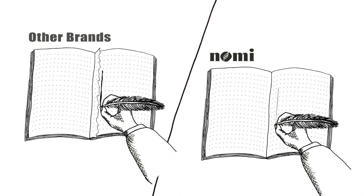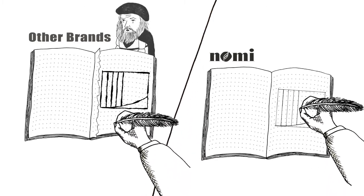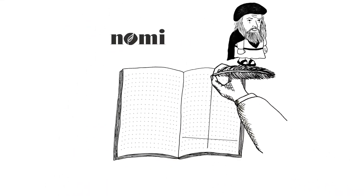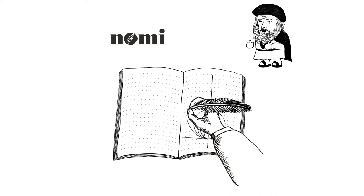Does the ink feather, causing a clean line to blur with unwanted ink spreading across the page? Is the paper surface smooth so that your pen glides across the page?